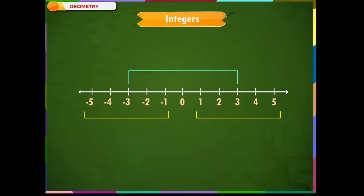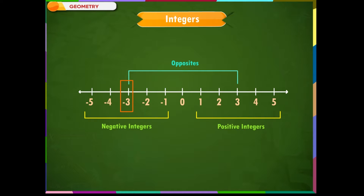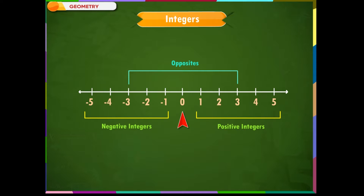There is a specific way of representing negative numbers — by using minus signs. So, minus 1, minus 2, minus 3, minus 4, minus 5, and so on are negative integers. Remember, 0 is neither positive nor negative, as 0 doesn't have any direction.